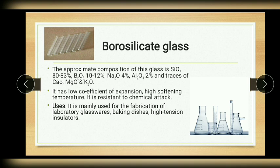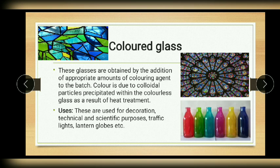The next one is colored glass. These glasses are obtained by the addition of an appropriate amount of coloring agent to the batch during the manufacturing process of glass. Different transition metal oxides such as manganese dioxide, selenium oxide, cupric oxide, etc. are added to obtain colored glasses. The color is due to the precipitation of colloidal particles within the colorless glass as a result of heat treatment. These glasses are used for decoration, technical and scientific purposes, traffic lights, lantern globes, etc.